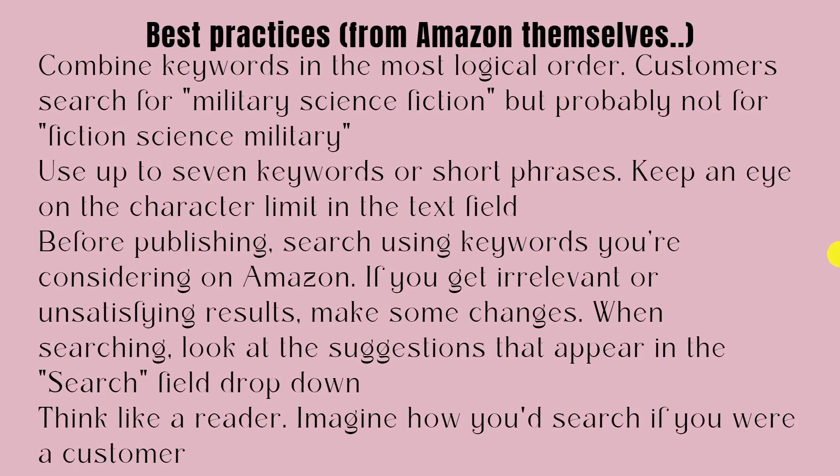They say combine keywords in the most logical order. Customers search for 'military science fiction,' but probably not for 'fiction science military.' Use up to seven keywords or short phrases. Keep an eye on the character limit in the text field. Before publishing, search using keywords you're considering on Amazon. If you get irrelevant or unsatisfying results, make some changes. Look at the suggestions that appear in the search field dropdown. And we're using the Self-Publishing Titans Chrome extension, so we get lots more than Amazon would just provide. Think like a reader — imagine how you'd search if you were the customer. That's pretty important, so using keywords that don't make any sense will just be a waste of your time.